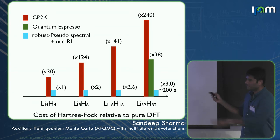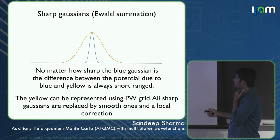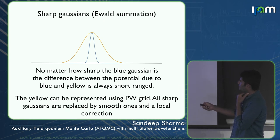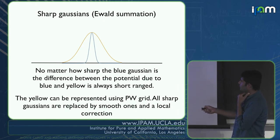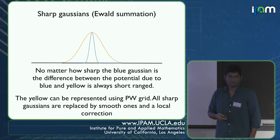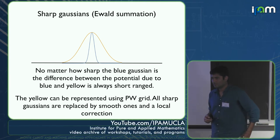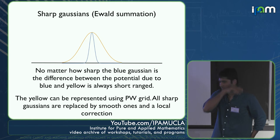Very briefly, I'll sketch how to handle all-electron calculations without pseudopotentials. If you have a sharp (blue) Gaussian that plane waves can't represent, you replace it with a sufficiently smooth (yellow) Gaussian that fits within your chosen plane wave cutoff. The algorithm is implemented in PySCF, not CP2K.